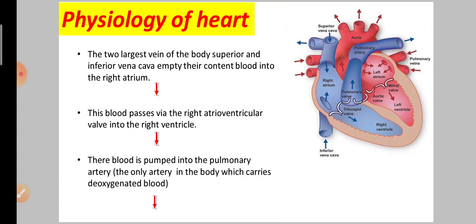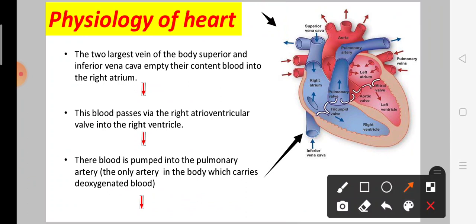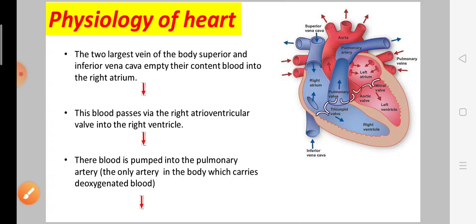Let's start with the physiology of heart. The superior and inferior vena cava are the two largest veins in the body. These veins carry blood into the right atrium. The blood passes through the right atrium.